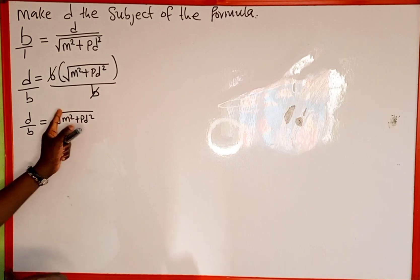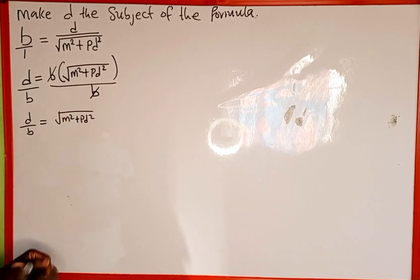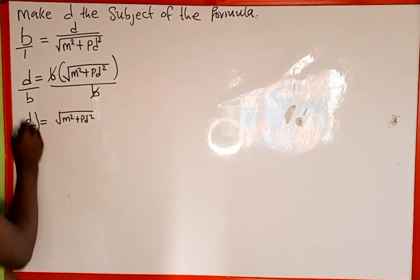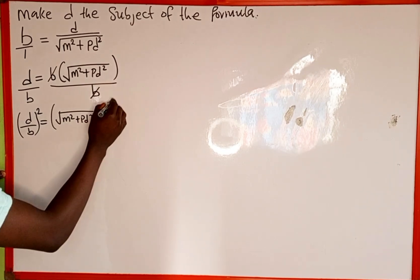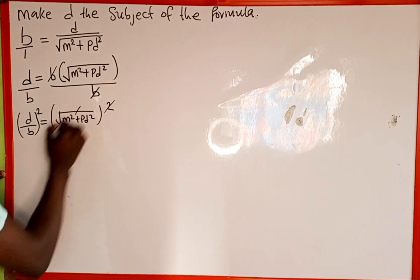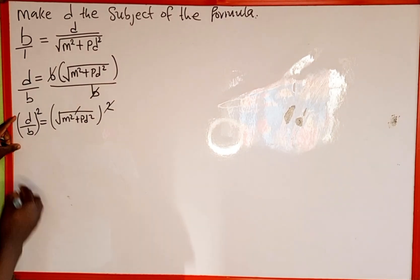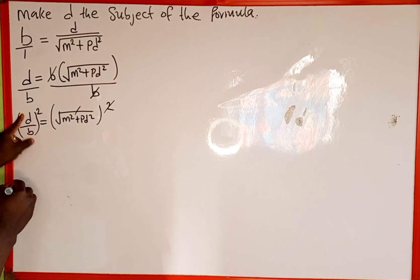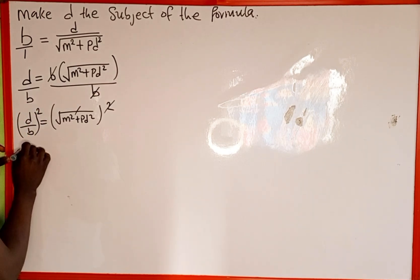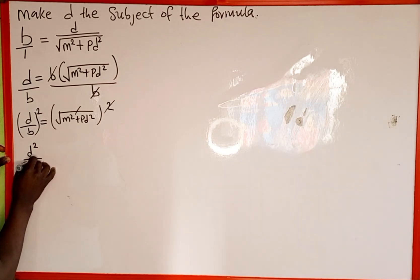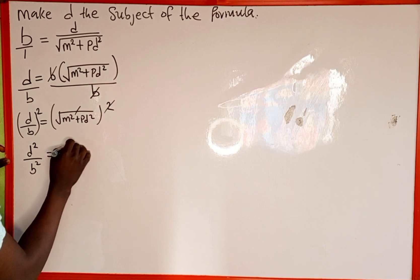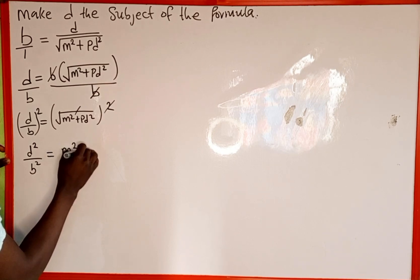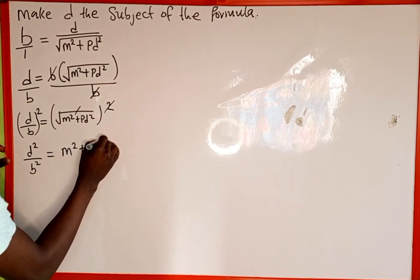Now the next thing we're going to do is to remove this square root by squaring both sides of the equation. We square both the left hand side and the right hand side so that the square cancels out the square root. On the left hand side the square affects both d and b, so we get d squared over b squared, which equals m squared plus pd squared.